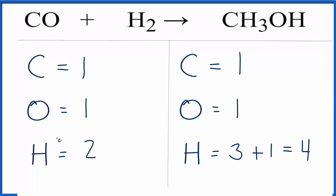So everything is balanced except the hydrogen atoms, and that should be pretty easy to fix. We need four here to balance these four, so two times two would give us four. So we can put the coefficient of two in front of the H2.